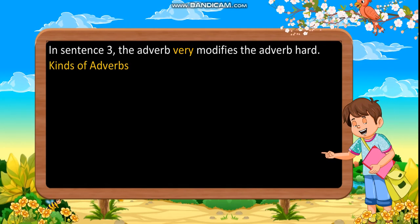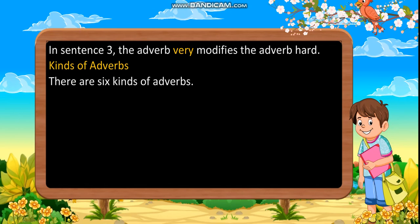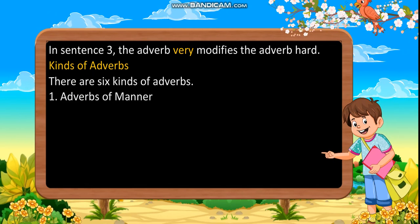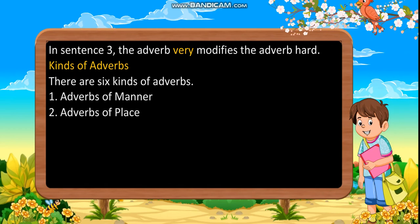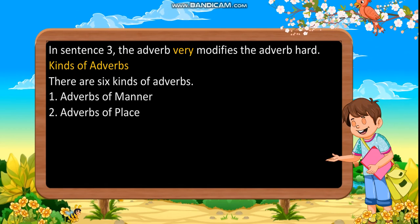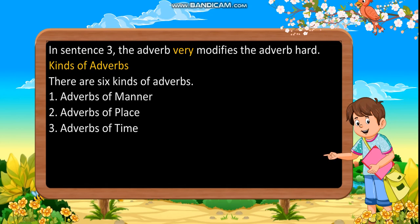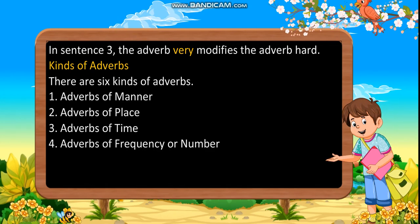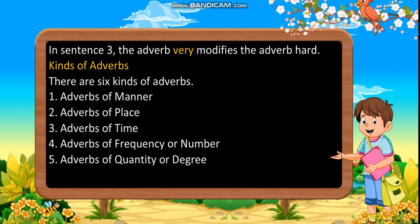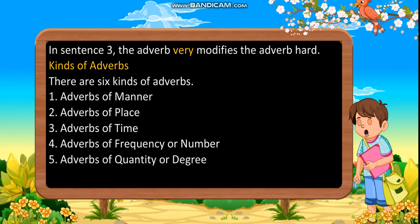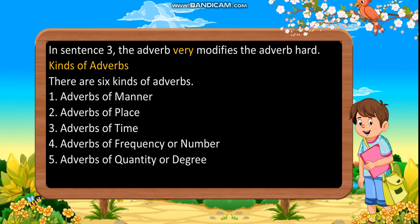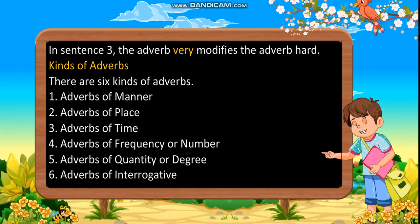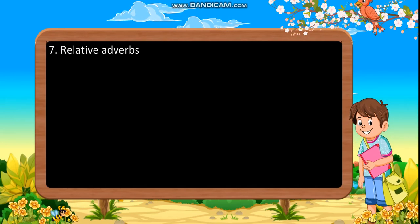Kinds of adverbs. There are six kinds of adverbs. First, adverbs of manner. Second, adverbs of place. Third, adverbs of time. Fourth, adverbs of frequency or number. Fifth, adverbs of quantity or degree. Sixth, adverbs of interrogative. Seventh, relative adverbs.